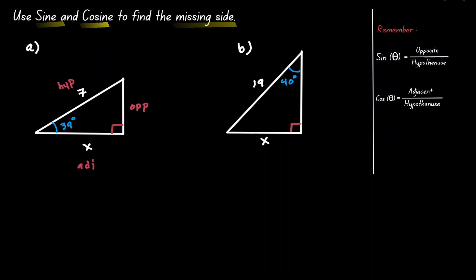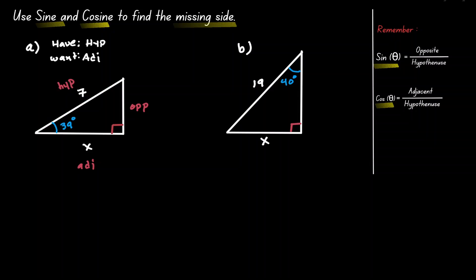To identify the function that we'll be using — either sine or cosine — we need to look into our triangle and see what information we want and what information we have. We want to figure out the length of the adjacent, and we have information about the hypotenuse. It makes sense for us to use cosine, because cosine is defined as adjacent, which is what we want, over the hypotenuse, which is what we have.